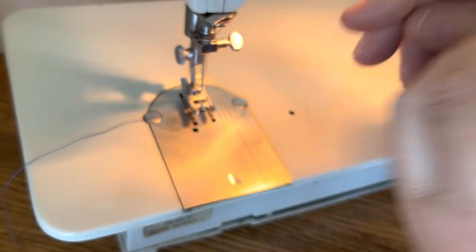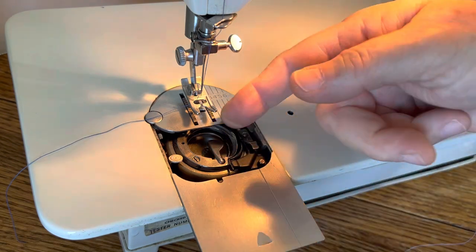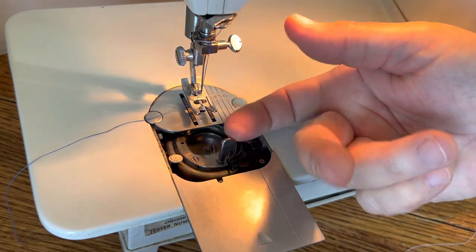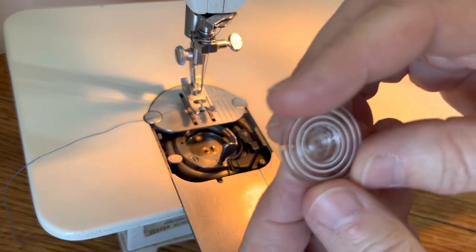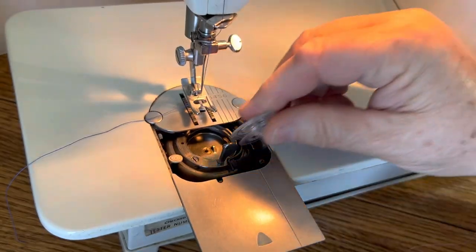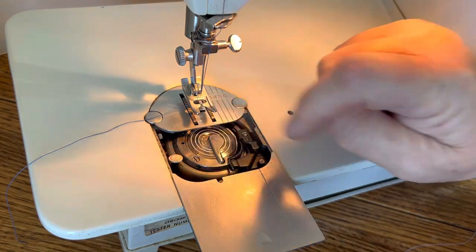So now we're going to place it in the machine. We're going to open our slide plate and we see this little tongue here and we're going to pick it up. We're going to put our bobbin in with the ring side up, and then we're going to place our tongue down.